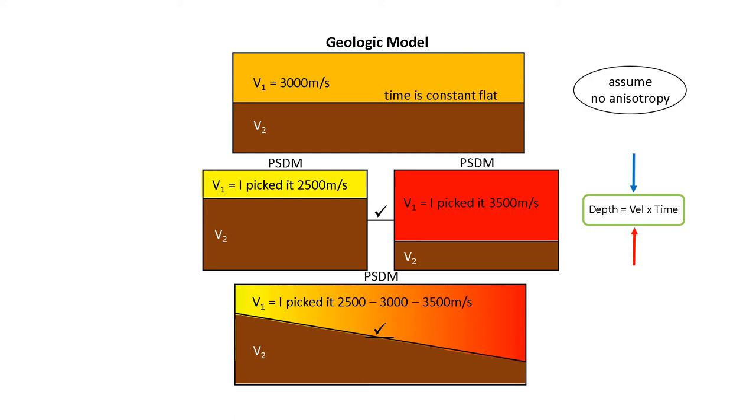At the top is a geologic model. Layer one is a constant 3000 meters per second. The base of layer one is flat. I'm assuming no anisotropy here.